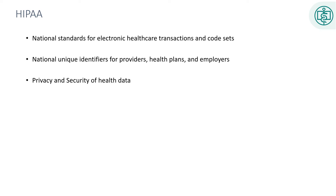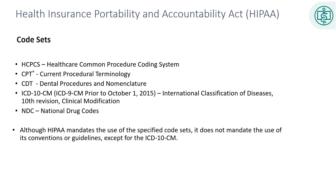Here's a tip: HIPAA privacy regulation breaches continue to rise. Always keep in mind the minimum necessary rule — if you don't need the information to complete your job, then don't look at the record. The code sets mandated by HIPAA include HCPCS, CPT, CDT, ICD-10-CM, and NDC. It is important to remember that although HIPAA mandates the use of the specified code sets, it does not mandate the use of its conventions or guidelines except for the ICD-10-CM.